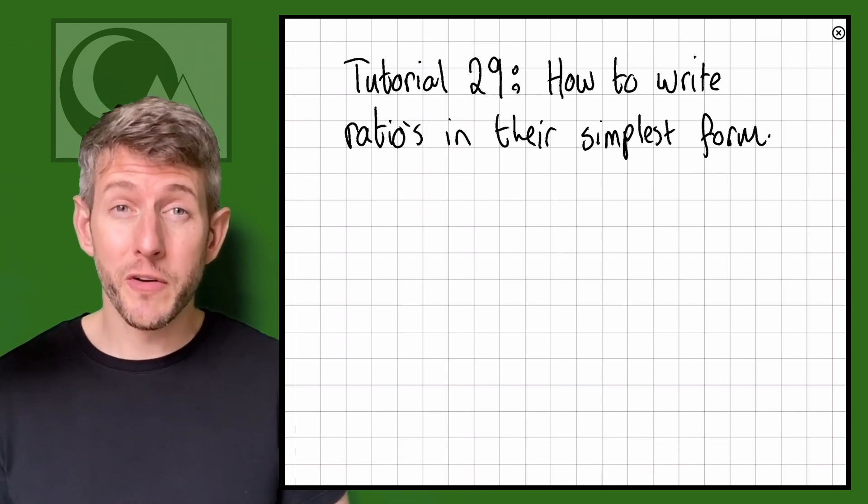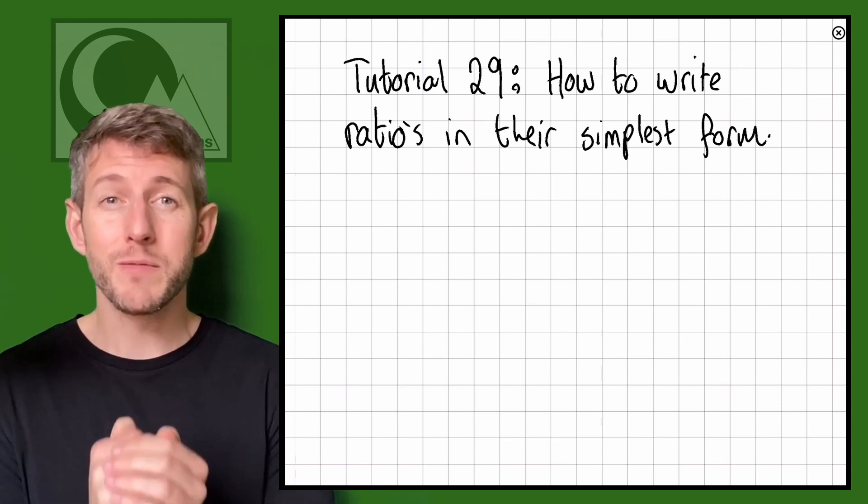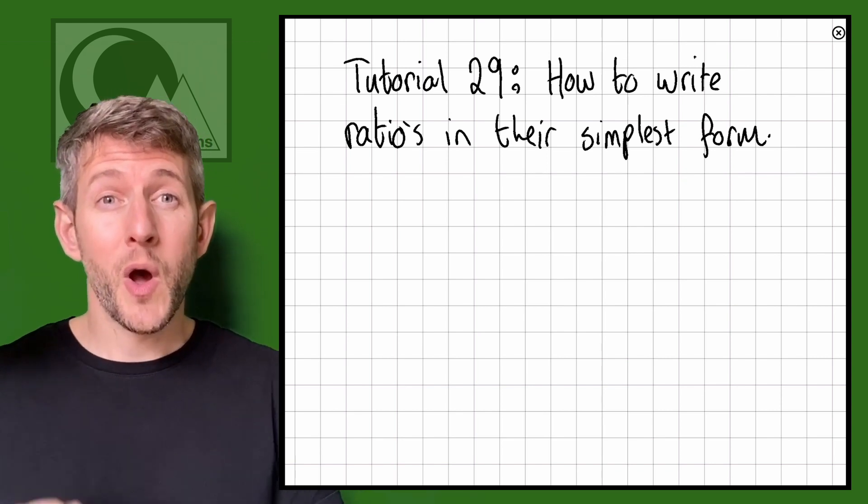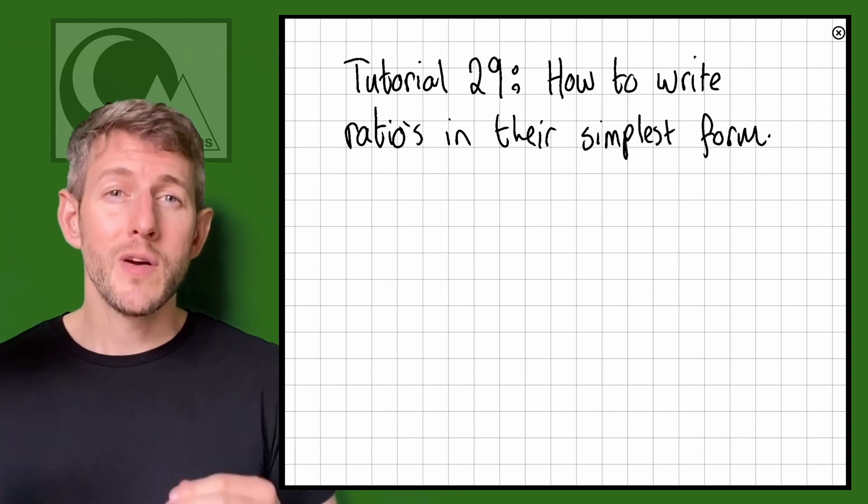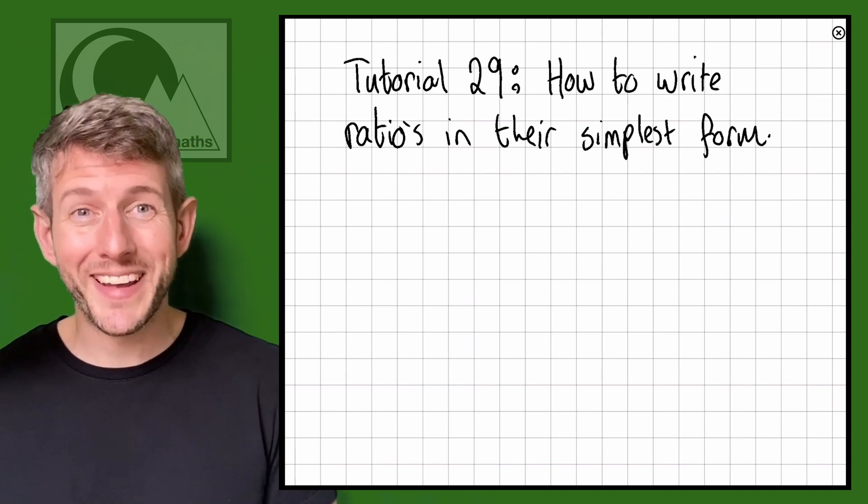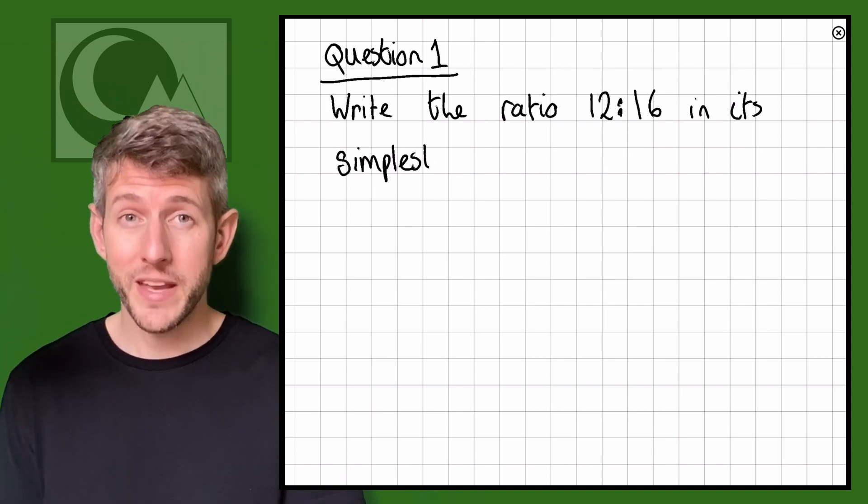If you're watching this tutorial you probably know a little bit about ratios, but what I want to go through first is a pictorial example of what this actually means to write a ratio in its simplest form. To do this I want to look at this question: write the ratio 12 to 16 in its simplest form.